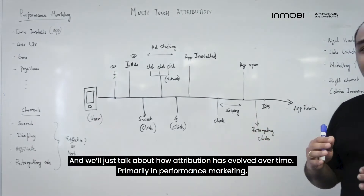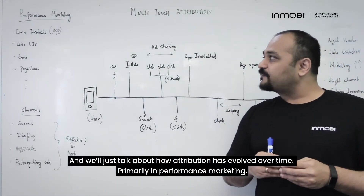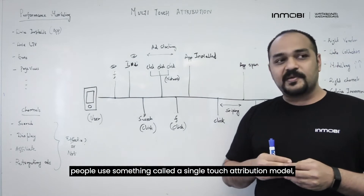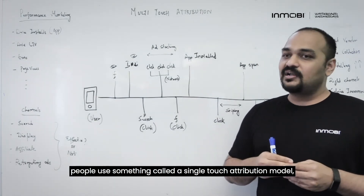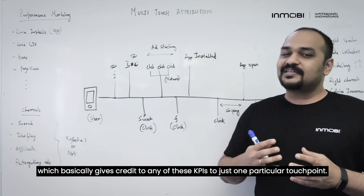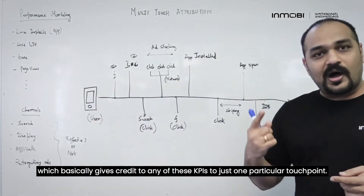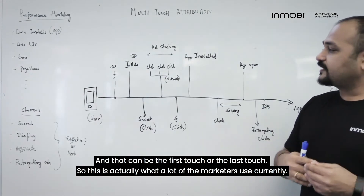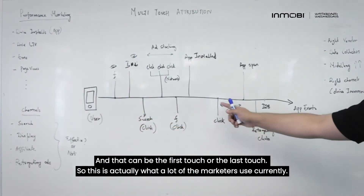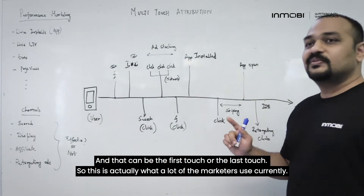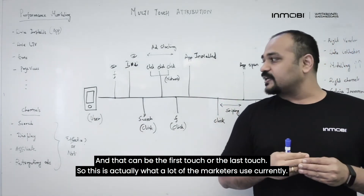Let's talk about how attribution has evolved over time. Primarily in performance marketing, people use something called a single-touch attribution model, which basically gives credit for any of these KPIs to just one particular touch point — and that can be the first touch or the last touch. This is actually what a lot of marketers use currently.